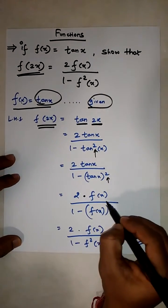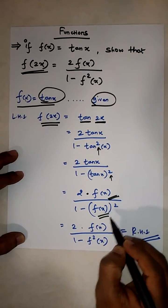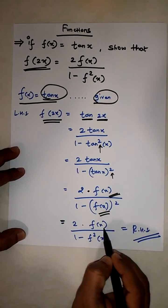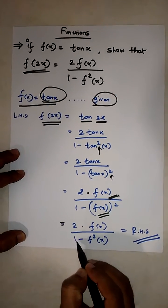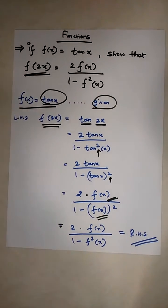So instead of tan(x), you can write f(x). In the denominator also, f(x) the whole square. So it is 2 into f(x) over 1 minus f²(x), which is the right hand side. Thank you.